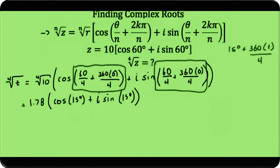So 15° plus 90° — that is 105°. So our second solution is 1.78[cos 105° + i sin 105°]. For our third solution, our k value goes up to 2.